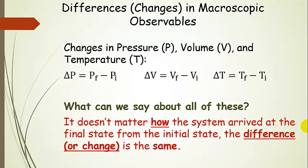Now let's look at some changes in macroscopic observables, using pressure, volume, and temperature as examples. Delta P is P final minus P initial. Delta V is similar, except we're talking about volume. Same goes for temperature. What can we say about all of these if we're just thinking about the initial and final state? In each case, we're going from an initial to a final and calculating a difference. It doesn't matter how that system arrived at the final state from the initial state — the only thing that matters is that difference.